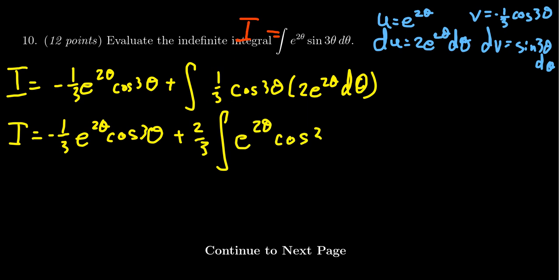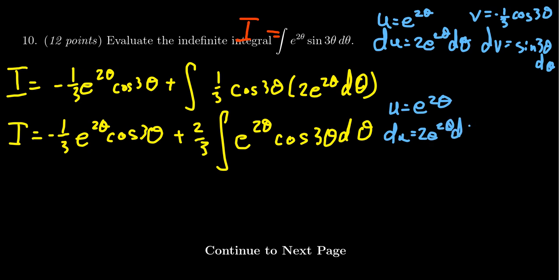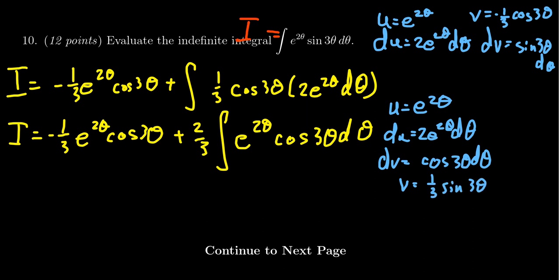As predicted, we now have an e to the two theta times cosine of three theta term, so we do integration by parts again — that's how integration by cycles works. Make sure you're consistent: since we used the exponential as u before, we do so again. So u equals e to the two theta, du equals two e to the two theta d theta, dv equals cosine of three theta d theta, and v equals one third sine of three theta.